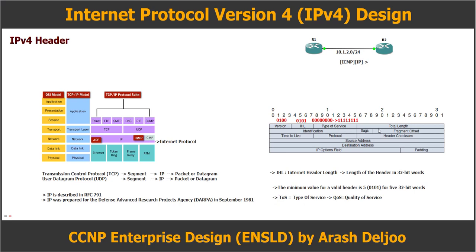After that, we have Total Length. For the Total Length field, as you can see, we have 16 bits. Here we have the header — IHL — and this is the Internet Header Length.